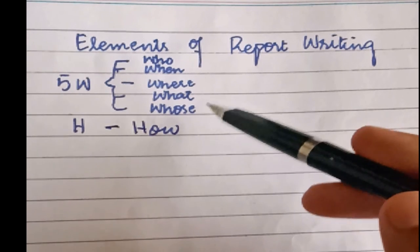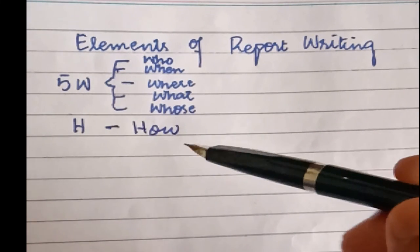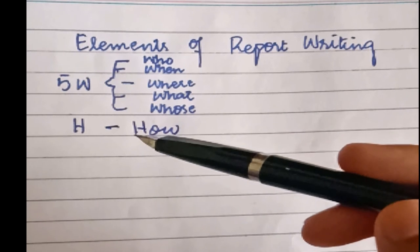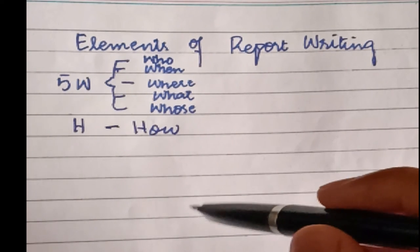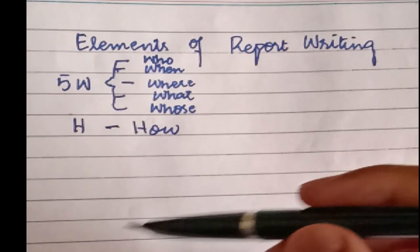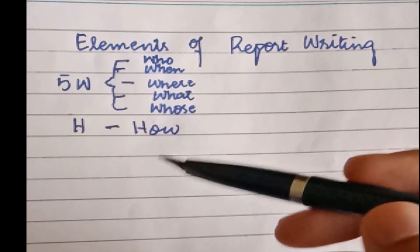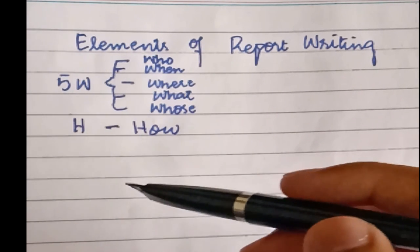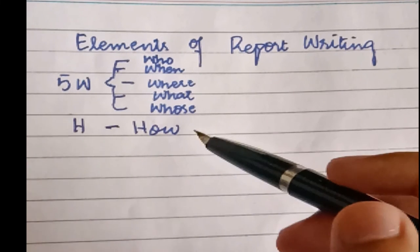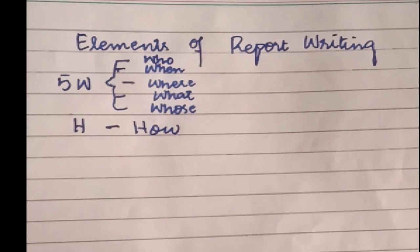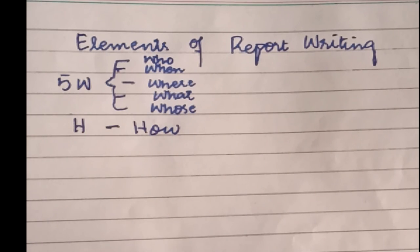So these are two major elements which we use for proper report writing. To make a good report, you have to concentrate on the event. If you mention these important points, then your report will become a very good report. I hope you will see my video and your report writing will increase.